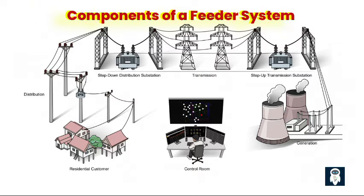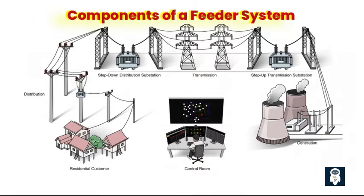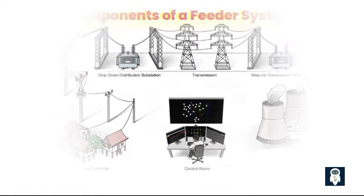These are the essential components of a feeder system in a power distribution network. Each component plays a specific role in transmitting electrical power, protecting the system, maintaining voltage levels, and enabling efficient operation and control of the distribution network.